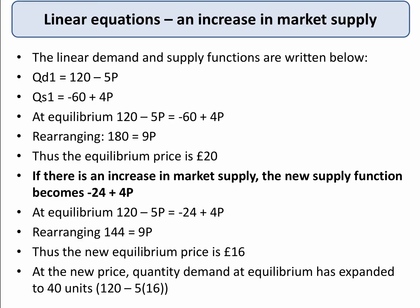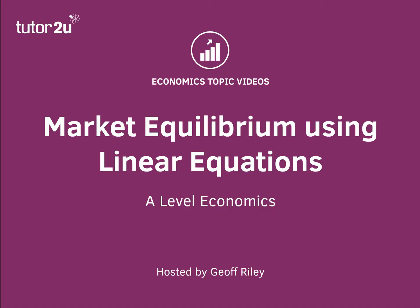The new supply function is minus 24 plus 4p. In other words, it only takes a £6 price for supply to be positive, whereas before it was £15. We've kept demand the same at 120 minus 5p. So at equilibrium, where supply equals demand: 120 minus 5p equals minus 24 plus 4p. Rearranging, we find that 9p equals 144, therefore the equilibrium price is 16. At the new price, the quantity demanded has expanded and clearly the price has gone down as a result of an outward shift of market supply. This is exactly what we'd expect to see in a market — market equilibrium using linear equations.